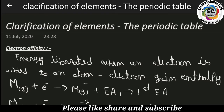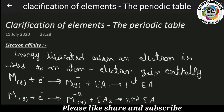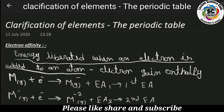In ionization energy, an electron is removed from an atom — from the valence shell — and the energy required to do that is called ionization energy. Here, the reverse: electron affinity is defined as the energy liberated when an electron is added to an atom. The energy liberated or released when an electron is added to an atom is called electron affinity. This is also called electron gain enthalpy.